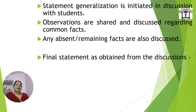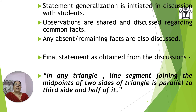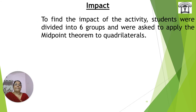Students decided to write 'any triangle' in place of 'right-angle triangle' or 'isosceles triangle.' Some had measured the lengths, and others tried in their own figures to verify the same relation. The final statement was made: in any triangle, a line segment joining the midpoints of two sides of a triangle is parallel to the third side and half of it. This was quite similar to the given statement, and students were able to remember it for a longer time because they had constructed it themselves through their own observations.